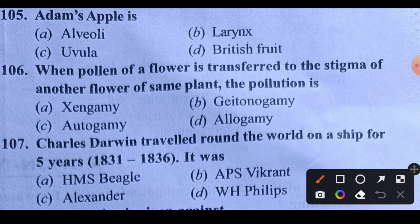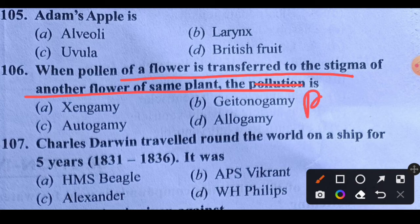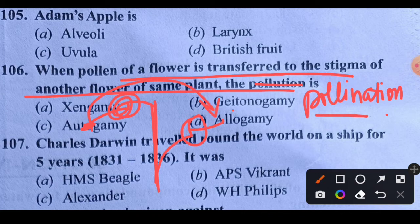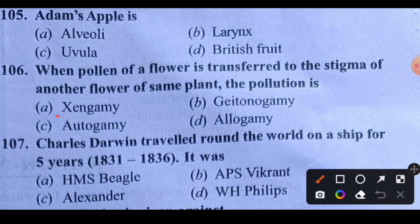Question 106: When pollen of a flower is transferred to the stigma of another flower of the same plant, the pollination is called what? This is a type of pollination where two flowers of the same plant are involved. Options: Zingami, Geitonogamy, or autogamy. This is called Geitonogamy, which is a type of autogamy. Option B is correct.